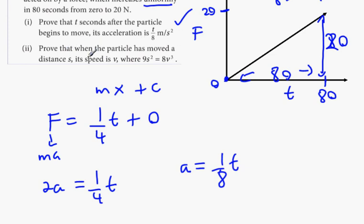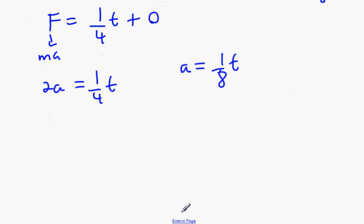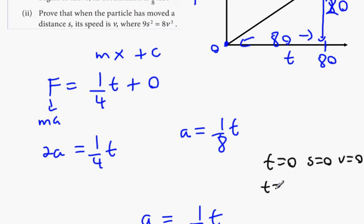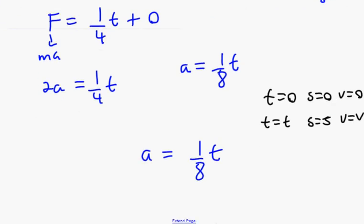Prove that when the particle has moved distance S, its speed is V, where 9S² equals 8V³. We have a equals one-eighth T. It wants S in terms of V. What limits do we know? When T equals 0, S equals 0, V equals 0 — everything starts from rest. T equals T, S equals S, V equals V for the upper limits. We're probably going to have to go through dV/dT first. dV/dT equals T/8. The V·dV/dS form isn't open to me at the moment because I have no equation with S in it.